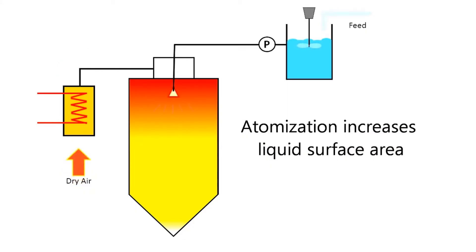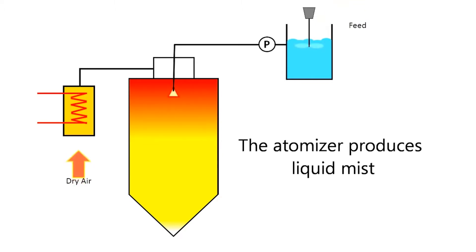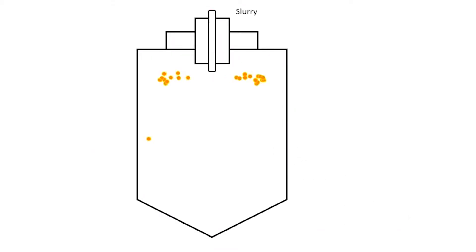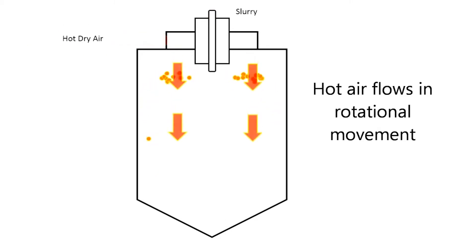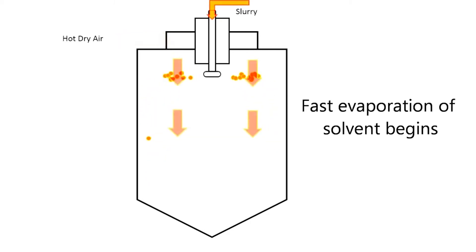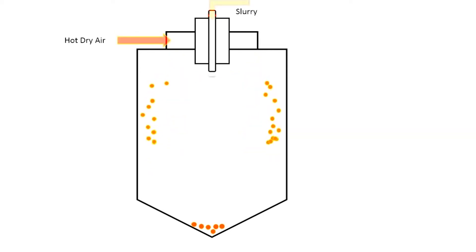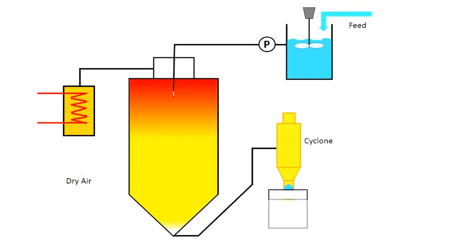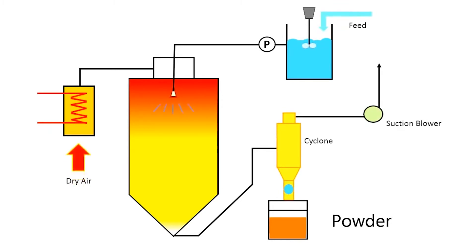The spray dryer provides a large surface area for heat and mass transfer by atomizing the liquid into small droplets. It has a drying chamber where hot air flows in a rotational movement and very fast evaporation of the solvent begins. The solid particles are formed at the bottom. The hot gas and the powder then go to the cyclone separator, where by centrifugal force the powder is separated from the hot air.